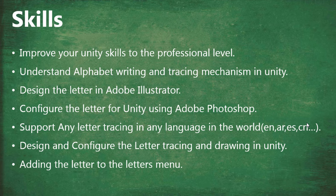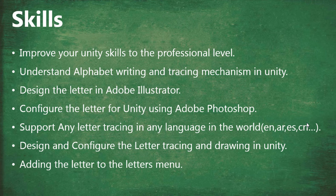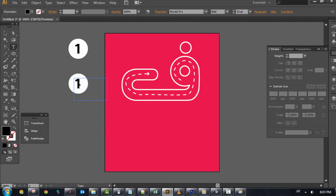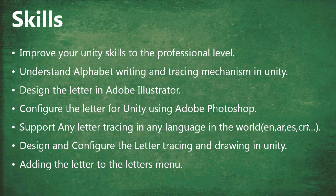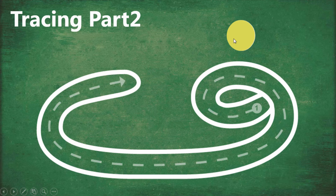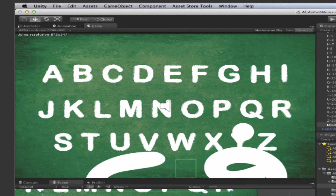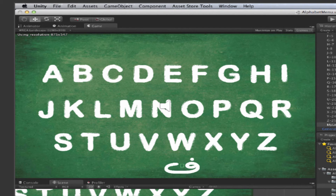The skills you're going to gain from this course: you're going to improve your Unity skills to the professional level, understand alphabet writing and tracing mechanism in Unity, design the letter in Adobe Illustrator, configure the letter using Adobe Photoshop, and support any letter tracing in any language in the world. You're going to be able to draw and configure any letter to the alphabet board, including the design and development for any language.